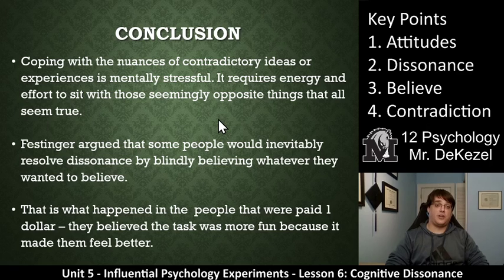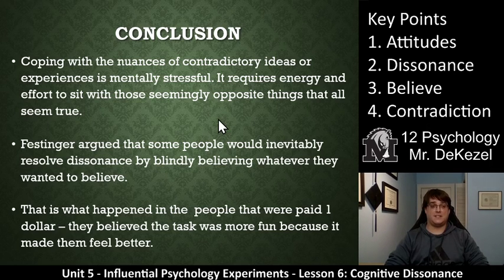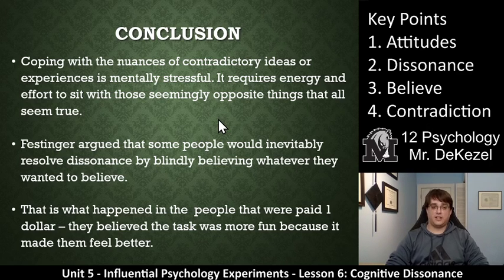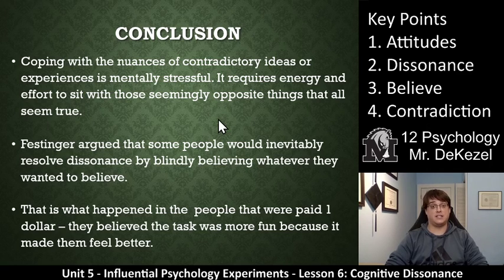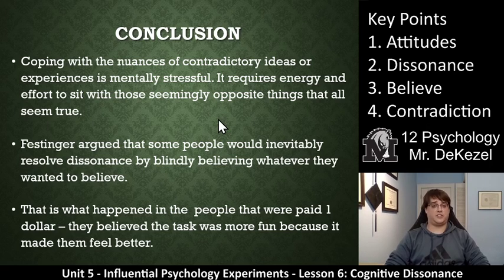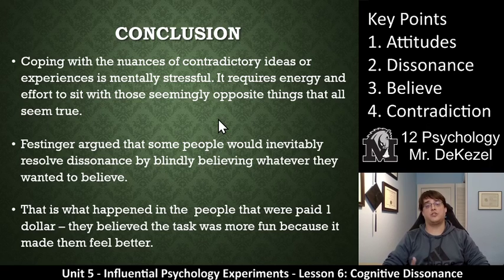In conclusion, coping with contradictory ideas — and this is key point four — is very mentally stressful. It requires a lot of energy and effort to sit with those seemingly opposite things that all seem true. Festinger argued that some people would inevitably resolve dissonance by blindly believing whatever they wanted to believe. They have adapted their beliefs to fit with their actions — it is much easier to twist your belief and understanding than it is to actually change your behavior. That's what happened to the people paid $1: they believed the task was more fun just because it made them feel better about themselves.